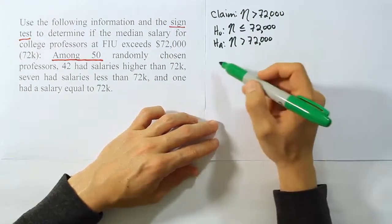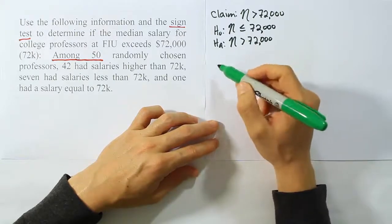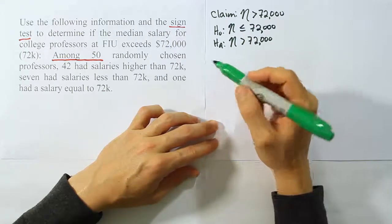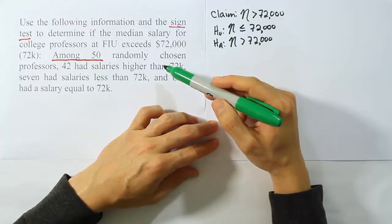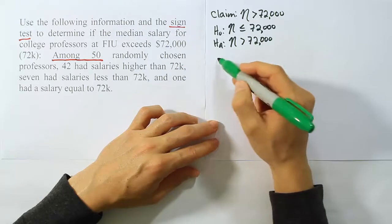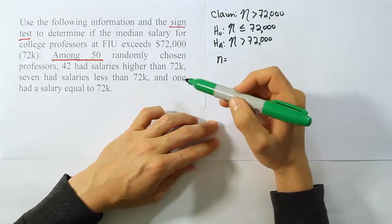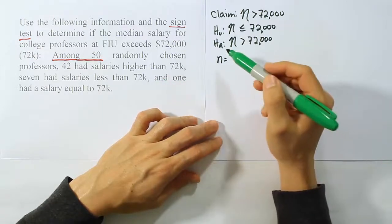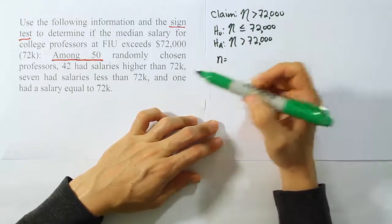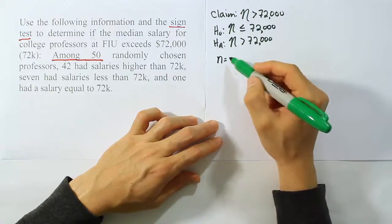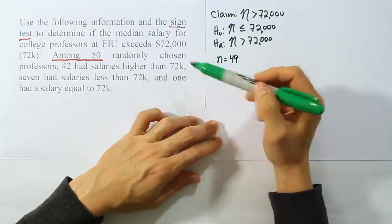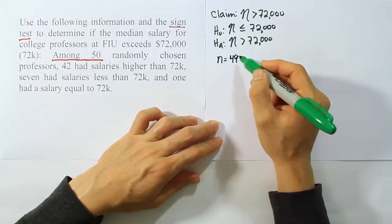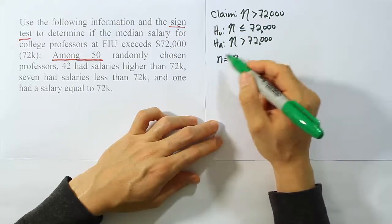From there we would normally use our data step. We can say N here is actually 49. You see why N is 49 here? Because we have one salary that's equal to $72,000, so we want to throw out that salary. Any time there's a tie, we discard it. So one salary equal to $72,000, we'll discard that salary and only look at the N equals 49 for the problem.